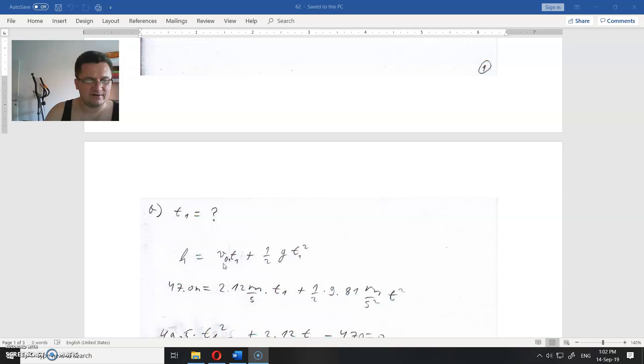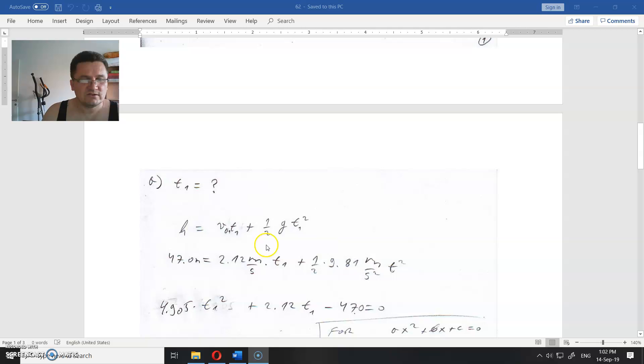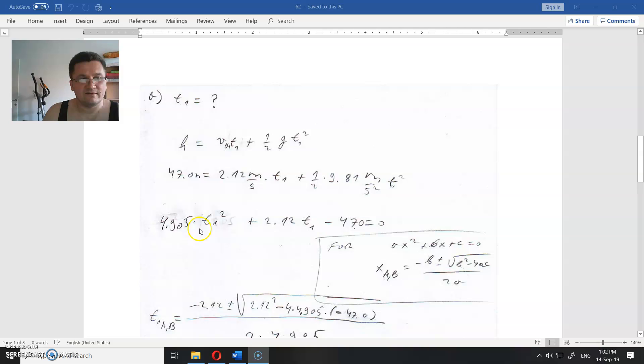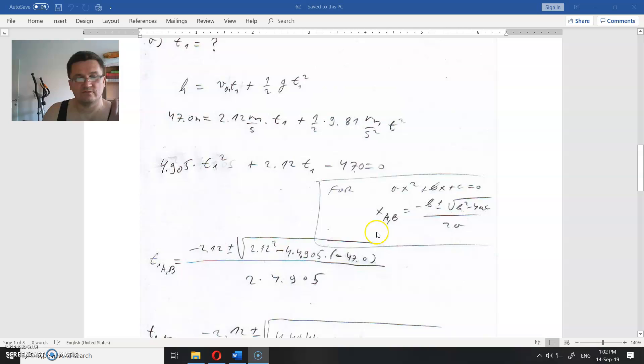When you have initial speed, this is the total traverse distance. We know the distance, we know the initial speed, and we know the gravitational acceleration, but we do not know the time. So when we fill this in, we will get one quadratic equation, and we will solve that equation.